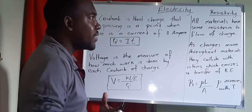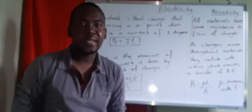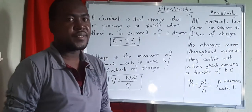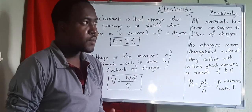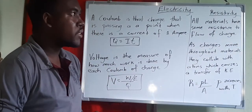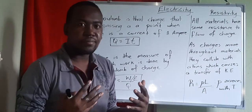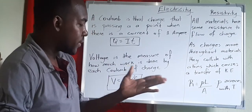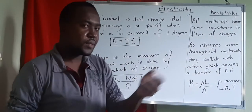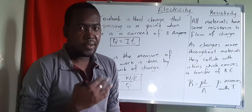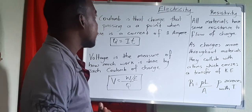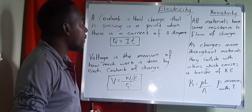Electricity, as you know, is these moving charges — conventional or electronic charges. Conventional means positive charges, and electrons means the negative charges.